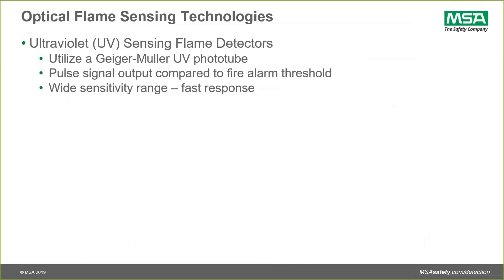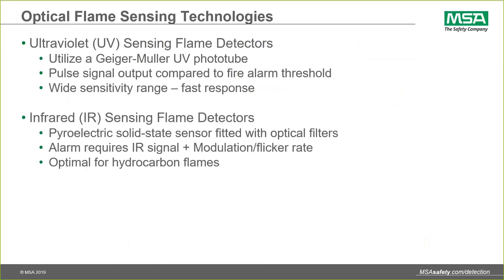Optical flame detectors started with ultraviolet sensing. These detectors use a Geiger-Müller UV phototube. They provide a pulse signal output in response to UV photons, and the signal processing around the UV detector compares that pulse train output level to a preset alarm threshold — traditionally 25 pulses per second. They bring a wide sensitivity range and very fast response, but unfortunately also had drawbacks, meaning they would respond to lightning and welding, which led to the development of a complementary optical sensing technology: infrared.